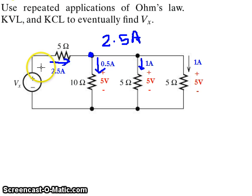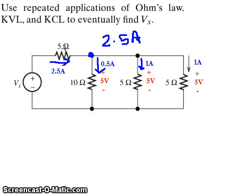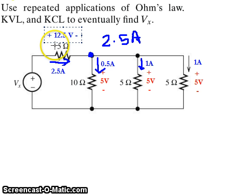Now we know the current through this 5 ohm resistor. Let's find the voltage across it. We have a current of 2.5 amps and a resistance of 5 ohms, so V equals IR gives us a total voltage drop of 12.5 volts across that 5 ohm resistor.